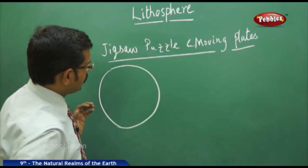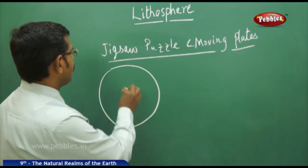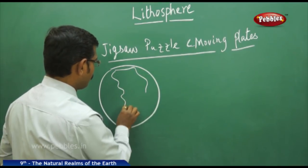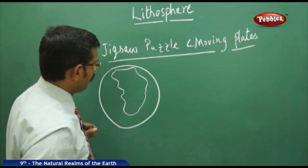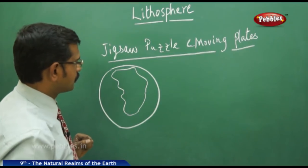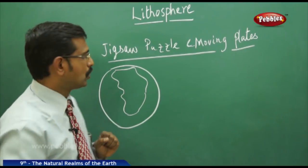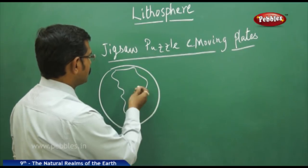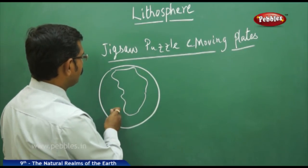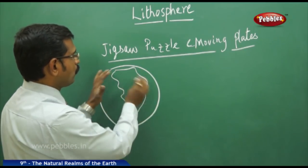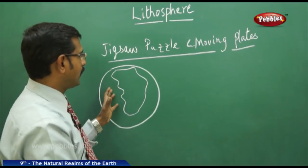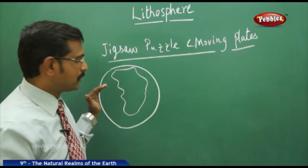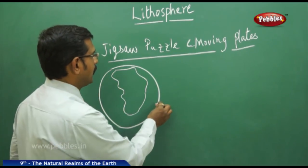As we discussed, billions of years ago all the land existed as one major landmass called Pangaea. And all the oceans were in one form — only one ocean, one water body — called Panthalassa.